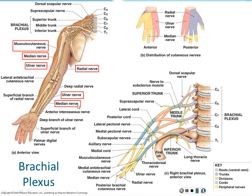The median nerve is sometimes called the million-dollar nerve, because if you cut it, that's the check you'd have to write to the patient. It controls the thumb, and without thumb motion you have a significant functional deficit. The pinky finger and half the ring finger are supplied by the ulnar nerve. The radial nerve supplies mostly the back of the hand, while the front is split between the median and ulnar nerves.